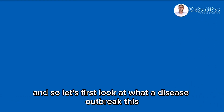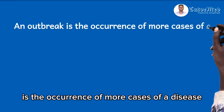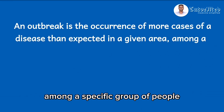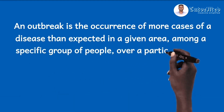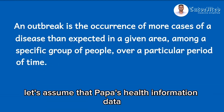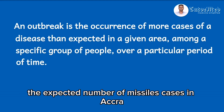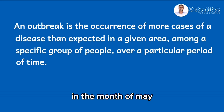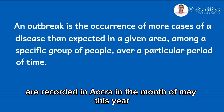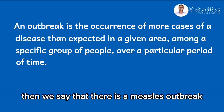Let's first look at what a disease outbreak is. A disease outbreak is the occurrence of more cases of a disease than expected in a given area among a specific group of people over a particular period of time. For example, let's assume that per past health information data, the expected number of measles cases in Accra, the capital of Ghana, in the month of May should be, say, 10 cases. If more than 10 cases — say, 20 cases of measles — are recorded in Accra in the month of May this year, then we say that there is a measles outbreak.